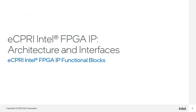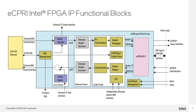We'll start with a look at the eCPRI IP functional blocks. This diagram displays the main functional blocks found in the eCPRI Intel FPGA IP. Let's take a deeper look at these blocks and what they do.